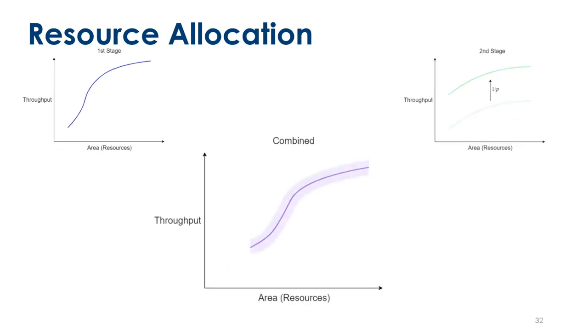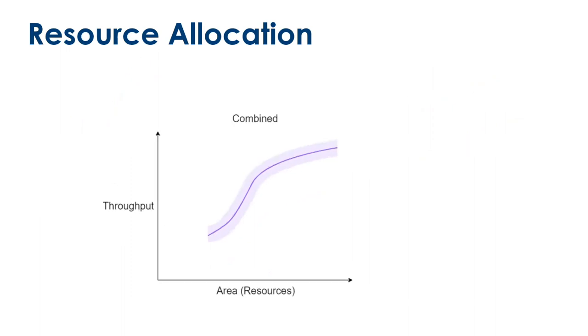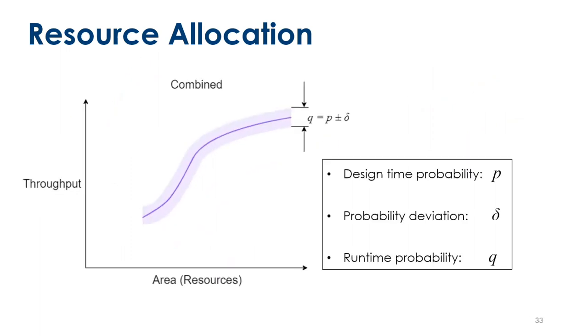Changes. So we model this as a sort of fuzzy area surrounding the main design curve. The borders of this area represent a deviation in probability of some delta from the design time probability p, and we call this runtime probability q.